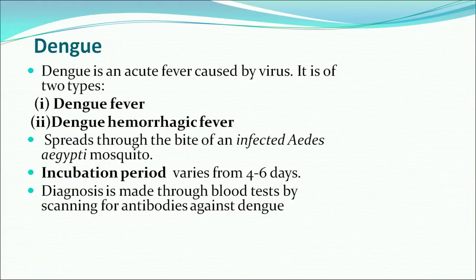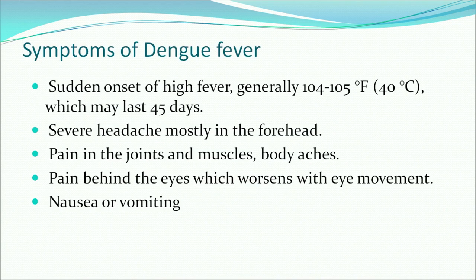The next disease is dengue. Dengue is an acute fever caused by a virus. It is of two types: dengue fever and dengue hemorrhagic fever. It spreads through the bite of an infected Aedes aegypti mosquito. Its incubation period is 4 to 6 days and can be diagnosed by blood test. Symptoms include sudden onset of high fever generally 104 degrees Fahrenheit which may last up to 5 days, severe headache, pain in the joints and muscles, body aches, pain behind the eyes, nausea and vomiting.